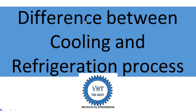In air conditioning, we reduce the temperature of the room. Which process is that — cooling or refrigeration? It is the refrigeration process, because by using the air conditioning system we reduce the room temperature below the atmospheric temperature. So when the room temperature is below atmospheric, it is known as the refrigeration process. The simple difference is: cooling is carried out above atmospheric temperature, refrigeration is carried out below atmospheric temperature — that is the main difference.